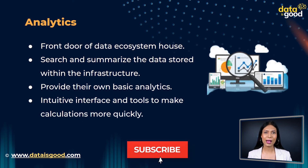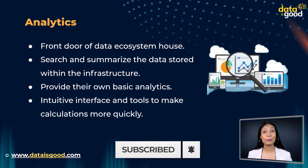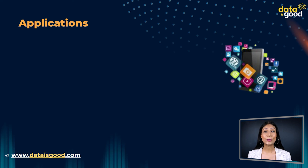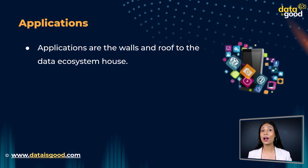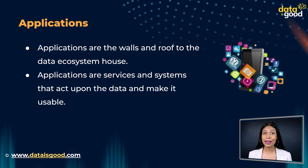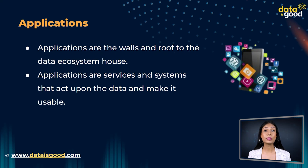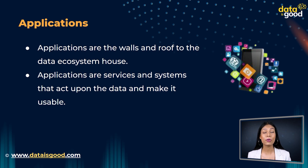Only analytics can segment users and measure them with marketing funnels, identify traits of ideal buyers, or automatically send in-app messages to users who are at risk for churn. The third element of data ecosystem is applications. Applications are the walls and roof to the data ecosystem house. They are services and systems that act upon the data and make it usable. For example, a product team might decide to port its analytics data into its marketing, sales, and operating platforms. This would allow the marketing team to score leads based on activity, the sales team to get alerts when ideal prospects engage, and the operations team to automatically charge customers based on product usage.